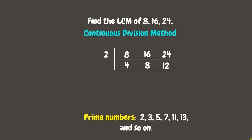Since all the quotients are even, we can still divide them by 2 again. 4 divided by 2 is 2, 8 divided by 2 is 4, while 12 divided by 2 is 6. The quotients are still even numbers, so we can divide them by 2 once more. 2 divided by 2 is 1, 4 divided by 2 is 2, while 6 divided by 2 is 3.